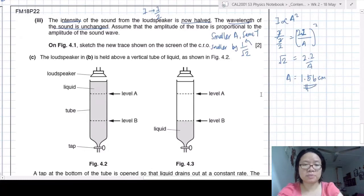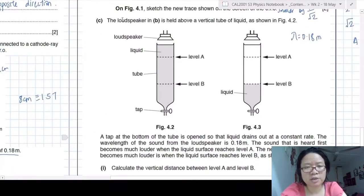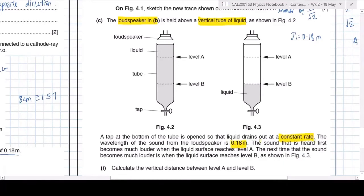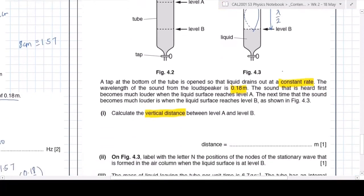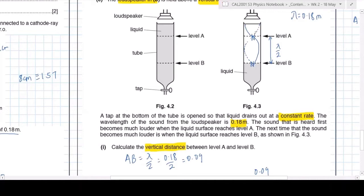So I'm going to move on. Now the loudspeaker is put on top of a vertical tube. And then the tap can open. Now the liquid can flow out. The tap at the bottom is open. So the liquid drains out at a constant rate. Wavelength of the sound of the loudspeaker is 0.18 meter. The sound is the loud sound. The sound that is heard first becomes much louder. So you've got, I'm just highlighting all the important information. First becomes louder at a and then becomes much louder when it's at b. So these are both your resonant lengths. So the best point of attack here is to sketch out the wave profile. So you can see now I'm trying to sketch. At level b, you probably will get something like this. At level a, it will be quarter. So the difference, the vertical distance between a and b is actually just lambda over 2. Of course, you are just adding lambda over 2. It should be 0.09 meter.